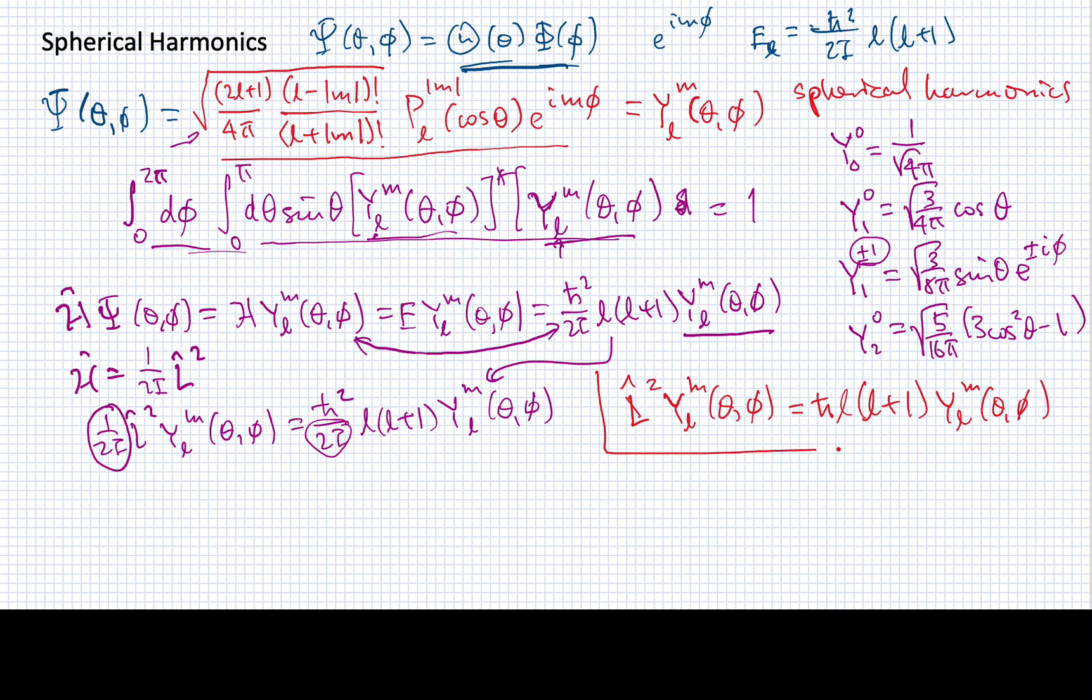So this result means that any time I have a Hamiltonian or something that depends upon the angular momentum squared, that part of the problem is going to have the spherical harmonics as an eigenfunction. And it will have this eigenvalue. So this is very powerful. Whenever I have L squared as part of my Hamiltonian, I'll be able to solve that piece of the Hamiltonian, at least, if not the whole Hamiltonian, using something related to the spherical harmonics.